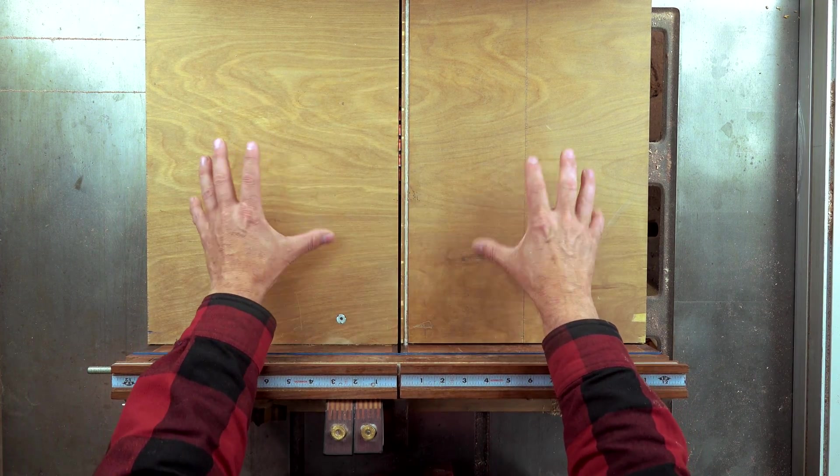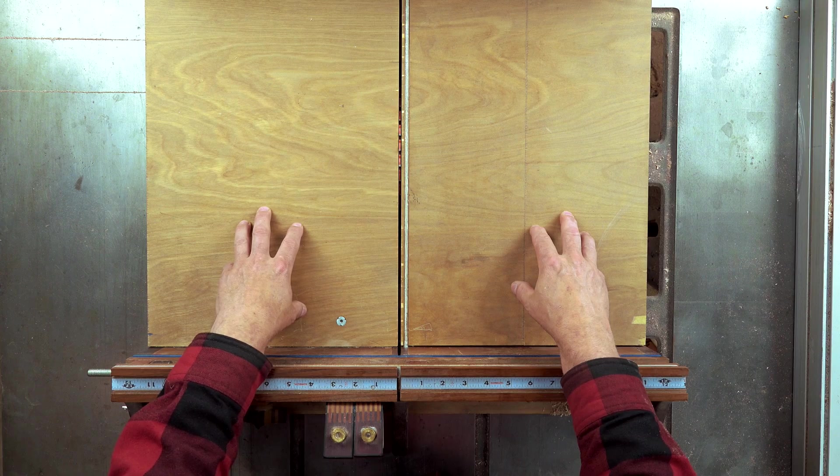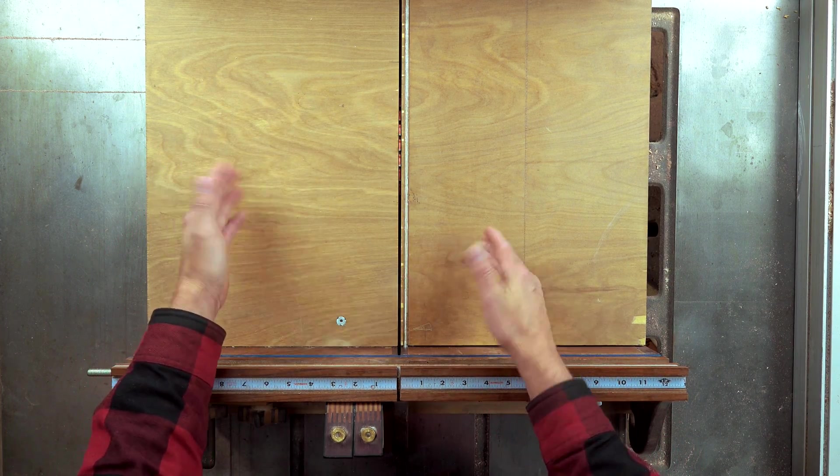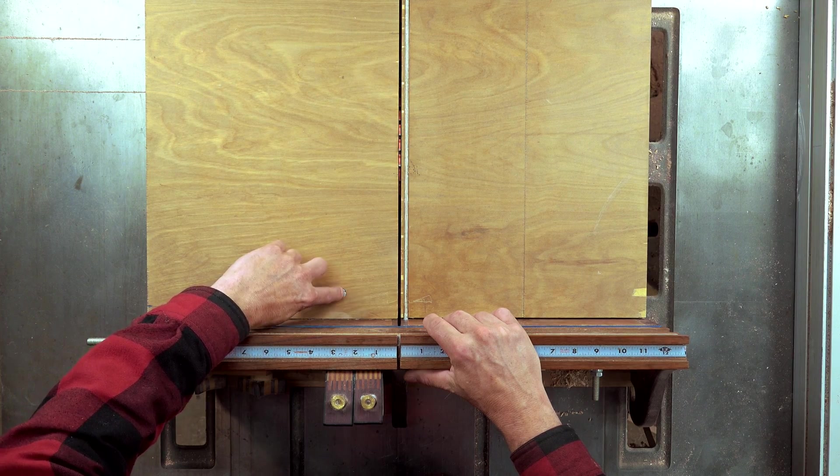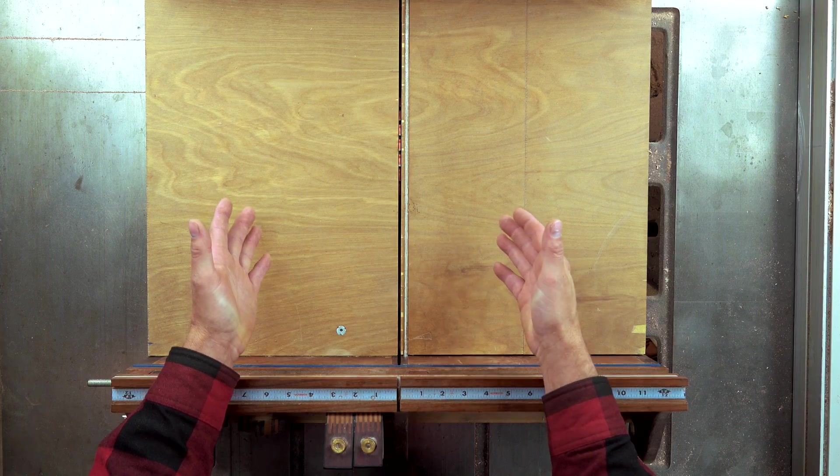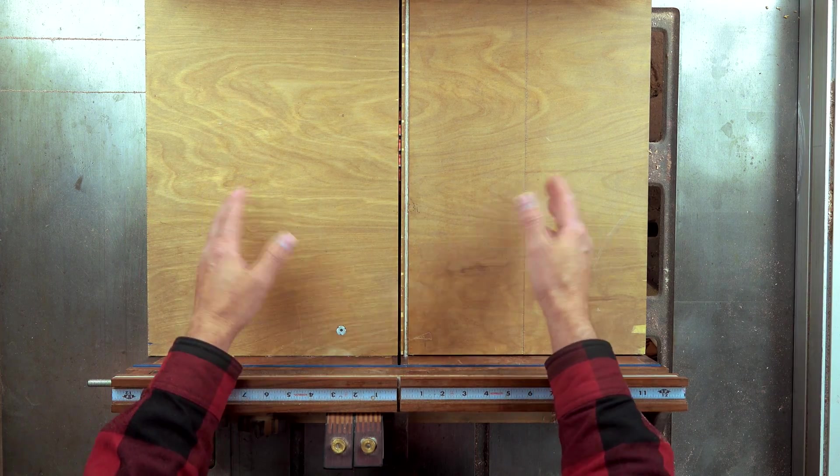Another thing that my sled won't do is it won't make angled cuts. Now I can always add a piece of wood on here that's at an angle, which I've showed before in the past. This is part of that project to cut a 45 degree angle. It's much easier to use a miter gauge to make those angles.